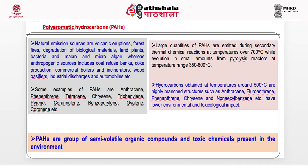Polyaromatic hydrocarbons (PAHs) are also volatile organic compounds. Natural emission sources include volcanic eruptions, forest fires, degradation of biological materials, land plants, bacteria, and macro- and microalgae. Anthropogenic sources include coal refuse banks, coke production, commercial boilers, incinerators, and wood gasifiers. All these become sources of PAHs such as anthracenes, phenanthrenes, tetracenes, chrysenes, and several others.